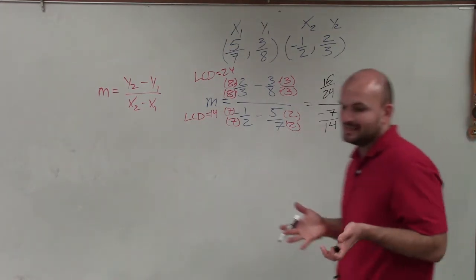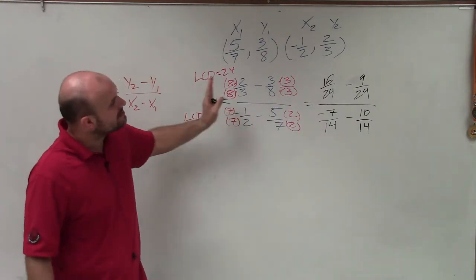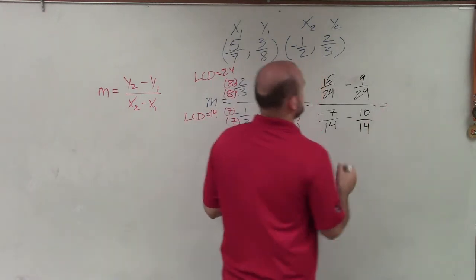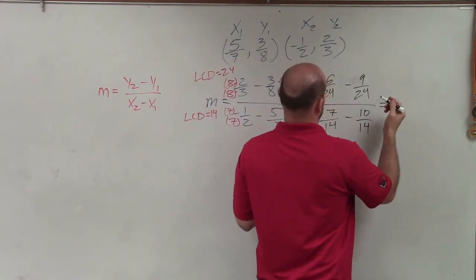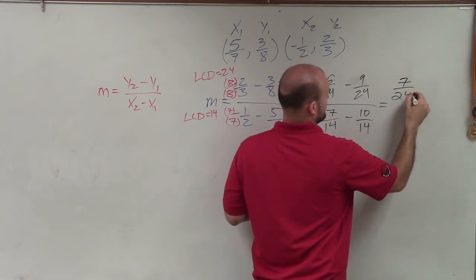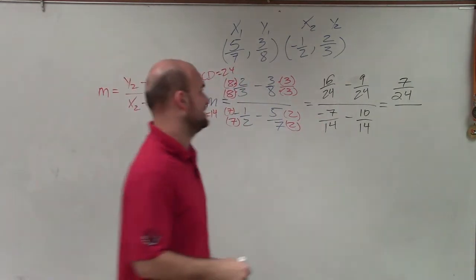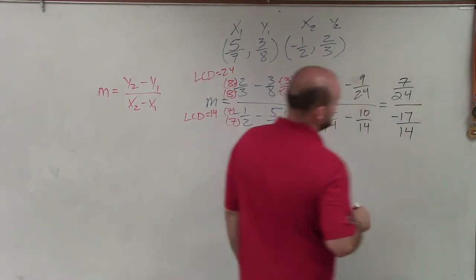So by multiplying to get my common denominator, as you can see now, I can subtract these directly across and keep in mind denominators. So therefore, 16 minus 9 is going to be 7 over 24. And then here, this is a negative 7 minus 10, so that's going to be negative 17 over 14.